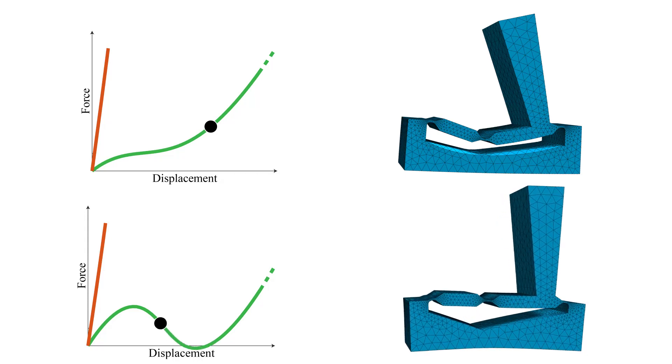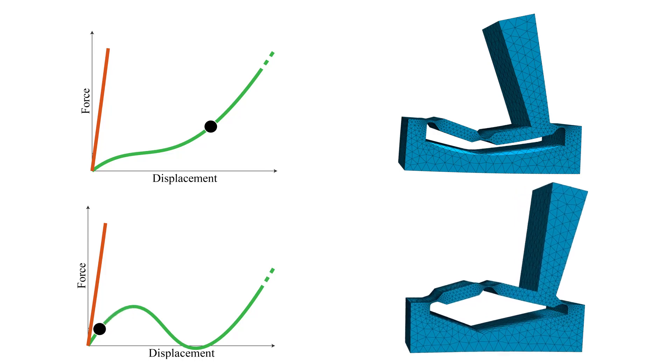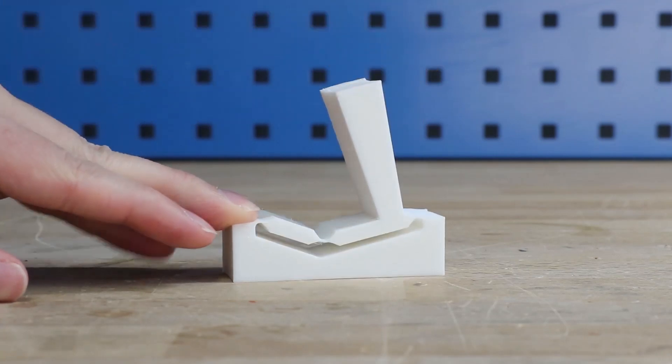As can be seen in the plot, this modified design now exhibits the desired second equilibrium point, which translates into a working prototype with the desired bistable behavior.